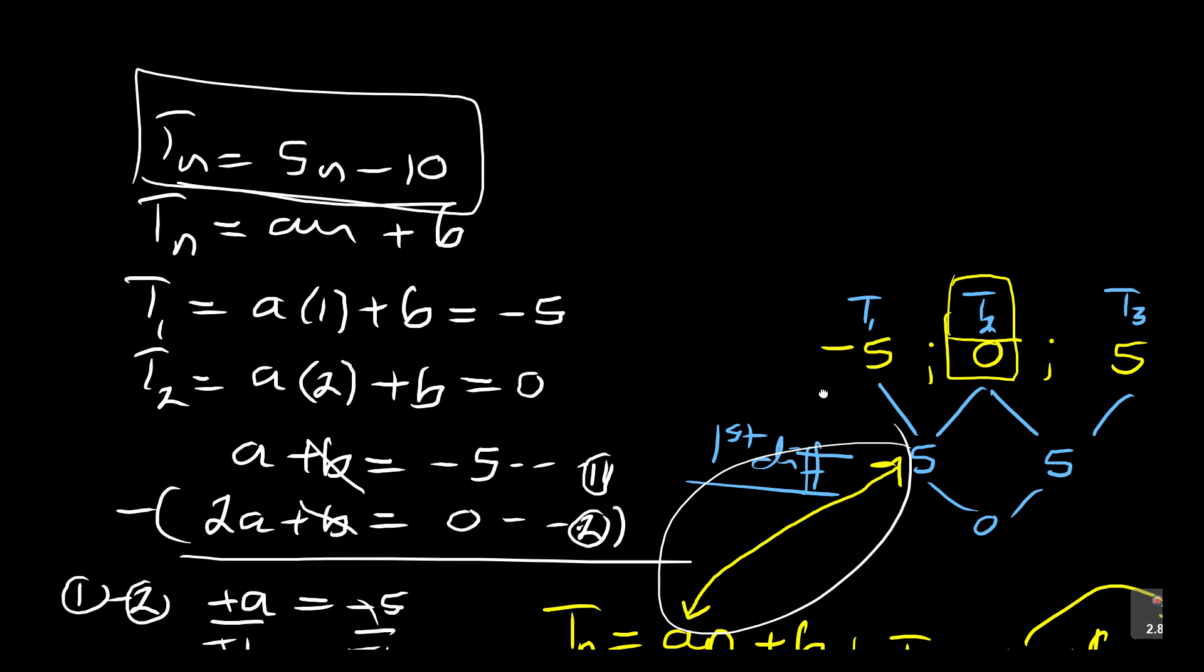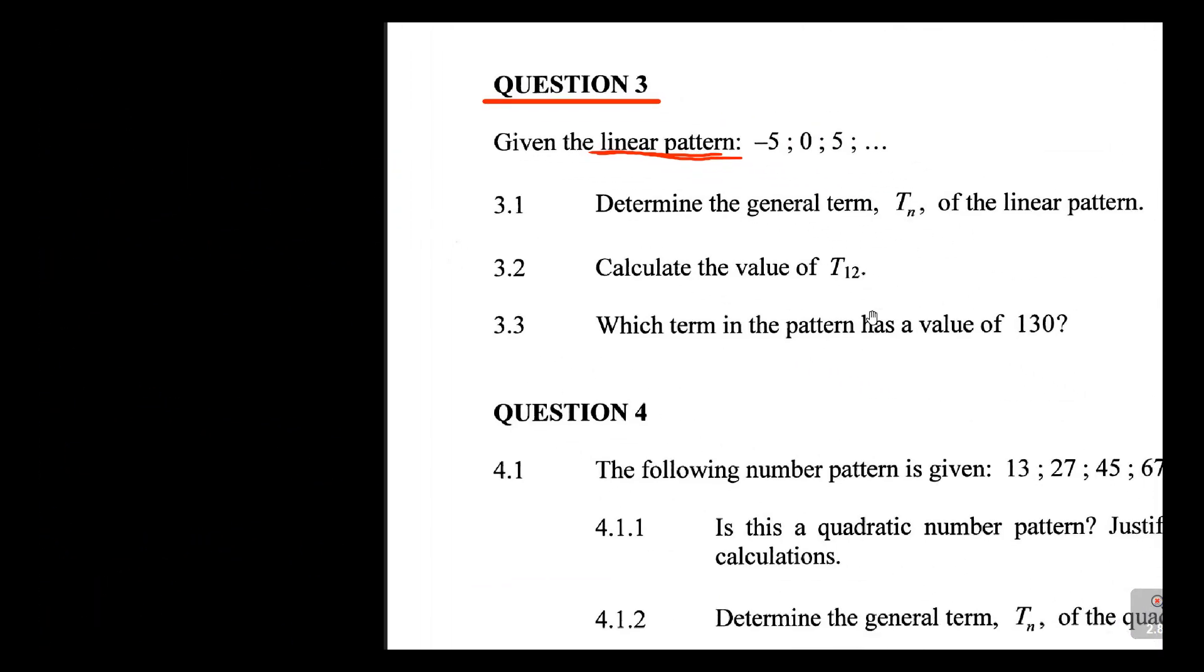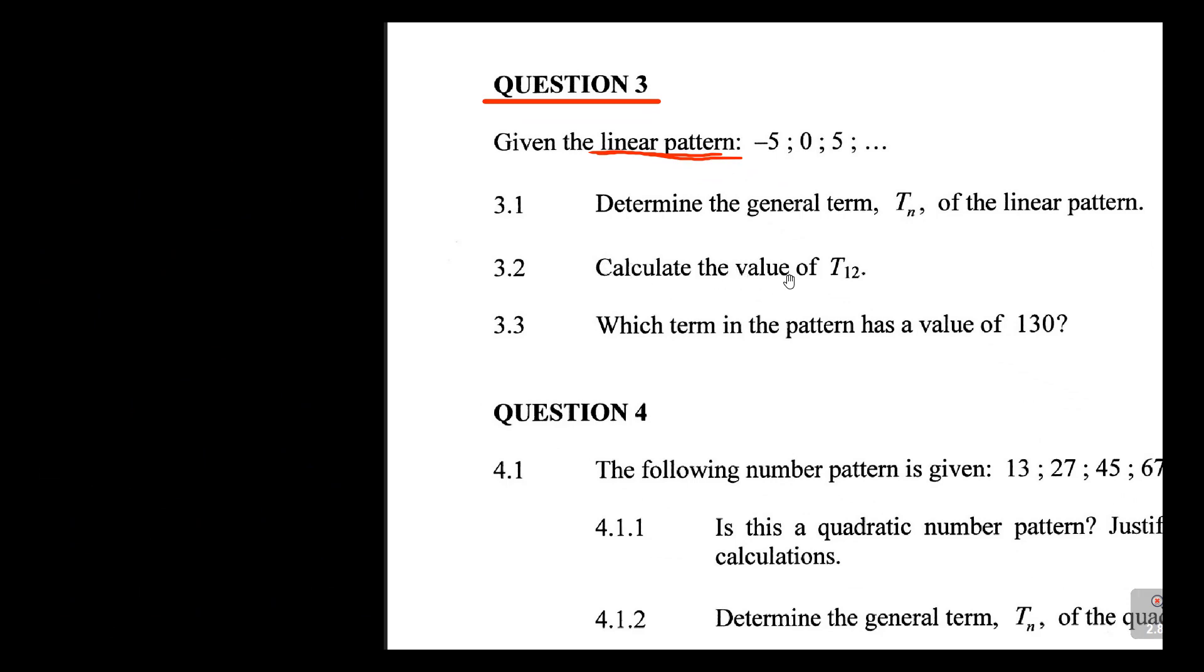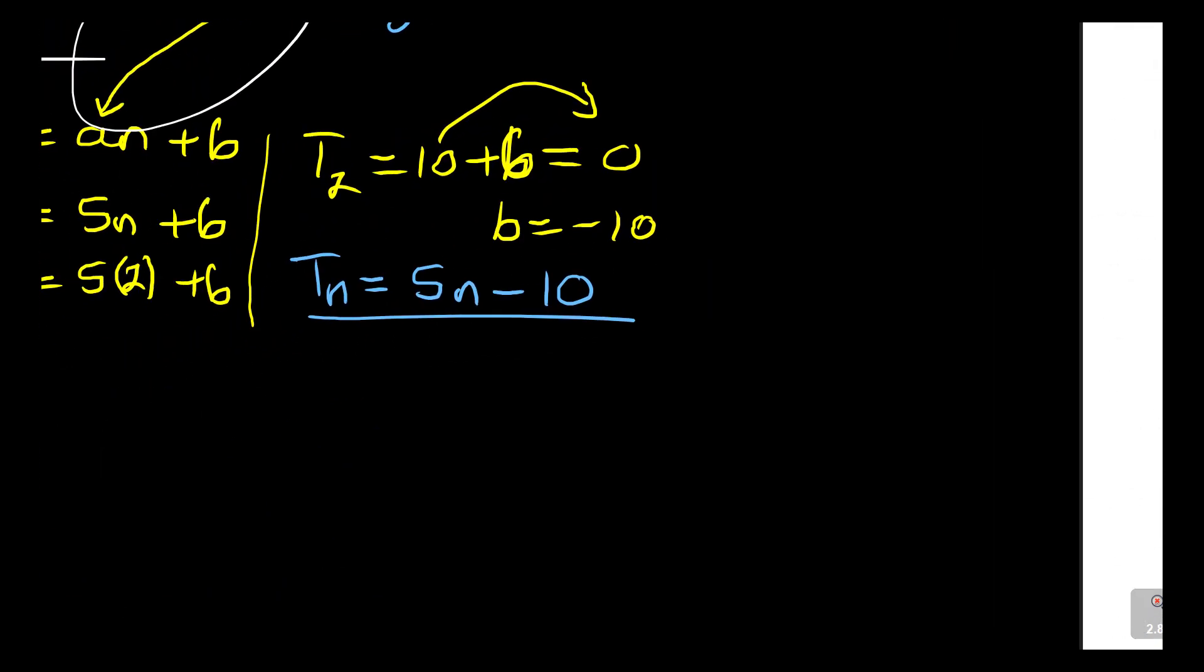Are you with me? Then the next question says here, calculate the value of T12. So it's simpler here. We come here and say if you take it from here to say T12 is equal to 5 bracket 12 minus 10. Now 5 times 12, this is 60 minus 10, and T12 will give you 50. This is T12.